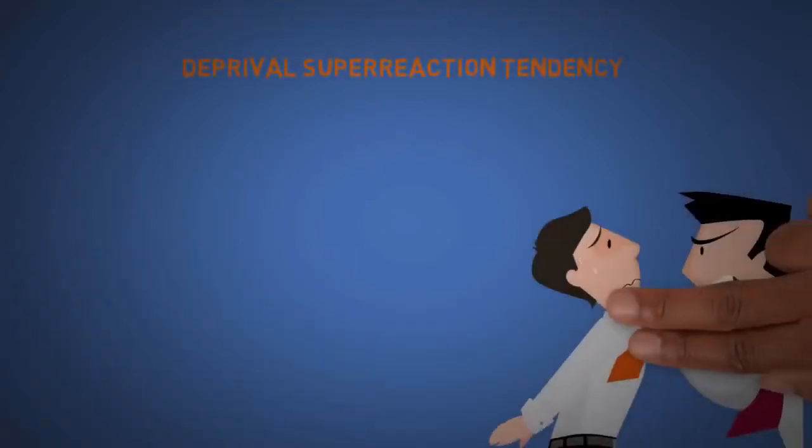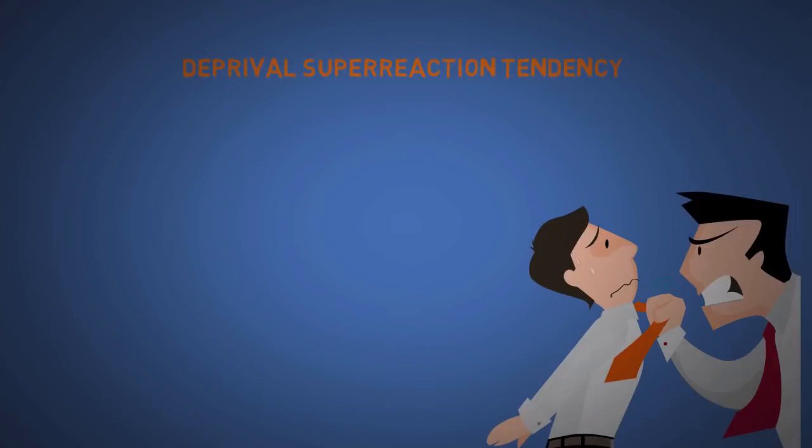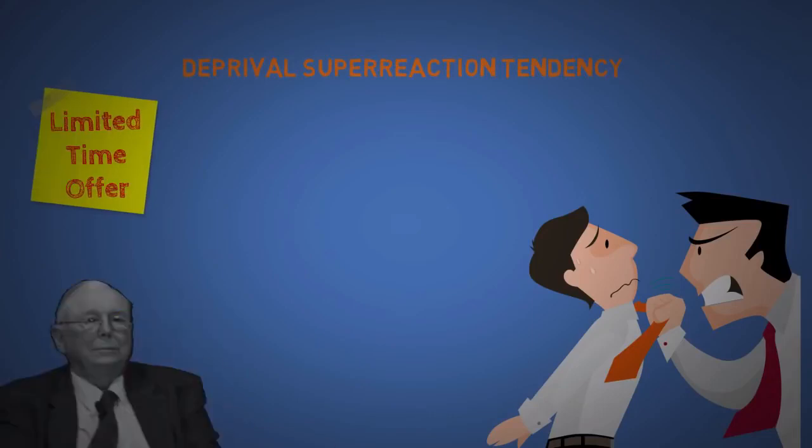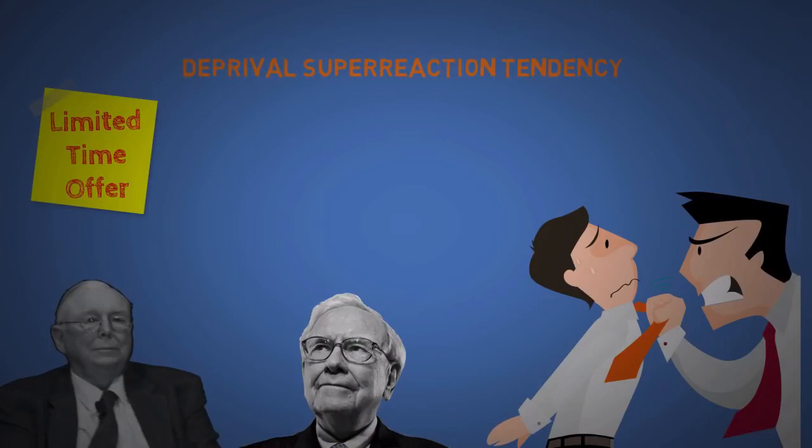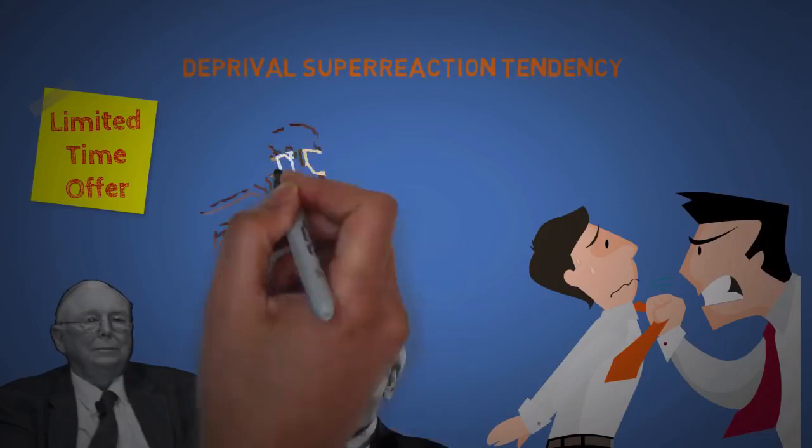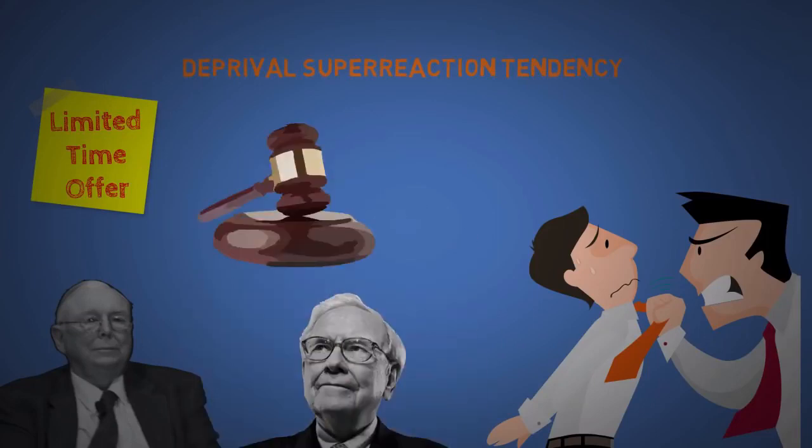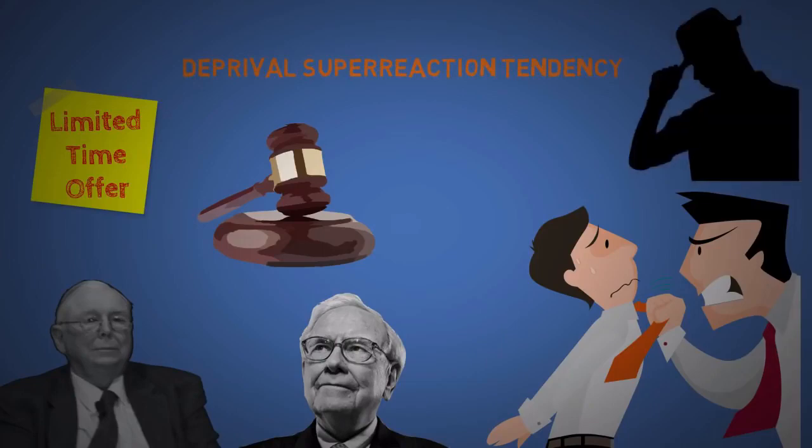The fourteenth is deprival super-reaction tendency. People tend to act irrational with intensity, even to small losses sometimes. This is why limited time offers are powerful. Even Charlie Munger and Warren Buffet, two of the most successful people in this world, both hate being in auctions because they always feel like getting manipulated. Going once, going twice, sold to the man wearing the fedora hat.